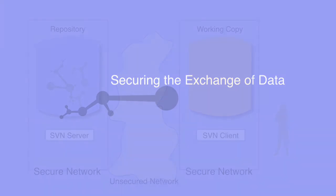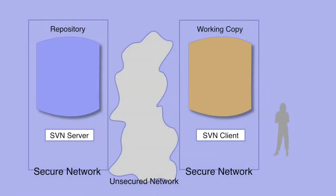The other data that we exchange between client and server is the data from the repository, not least of which are the files and folders. These data are, by default, not encrypted in any way. Like the exchange of username and password, you may decide that the network is already secure enough and no further action is required. Or you may already have a VPN set up, and this secures not only the username and password exchange, but also all the data that flows between the client and server.